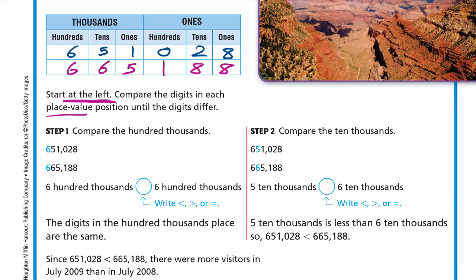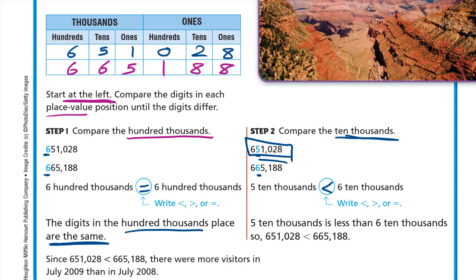Now start at the left and compare the digits in each place value position until the digits differ. Step one: compare the hundred thousands. Here it's six and here it's six — six hundred thousands equals six hundred thousands, so the digits are equal. Step two: compare the ten thousands. Here it's five, here it's six. Five ten-thousands is less than six ten-thousands, so 651,028 is less than 665,188.